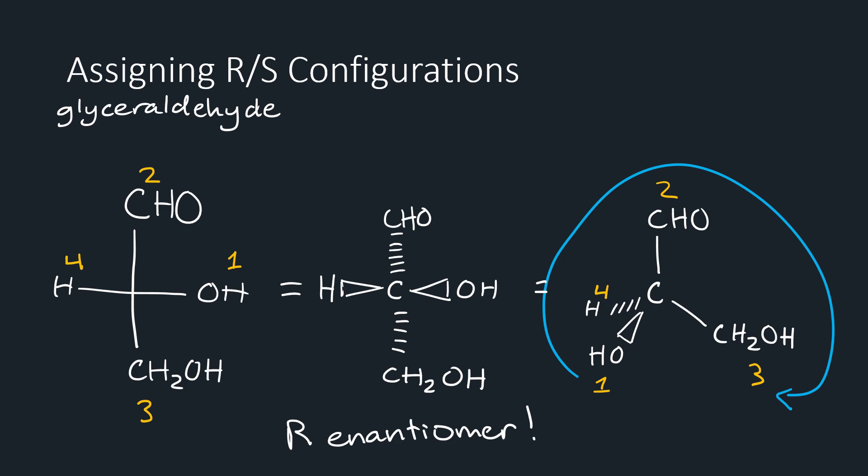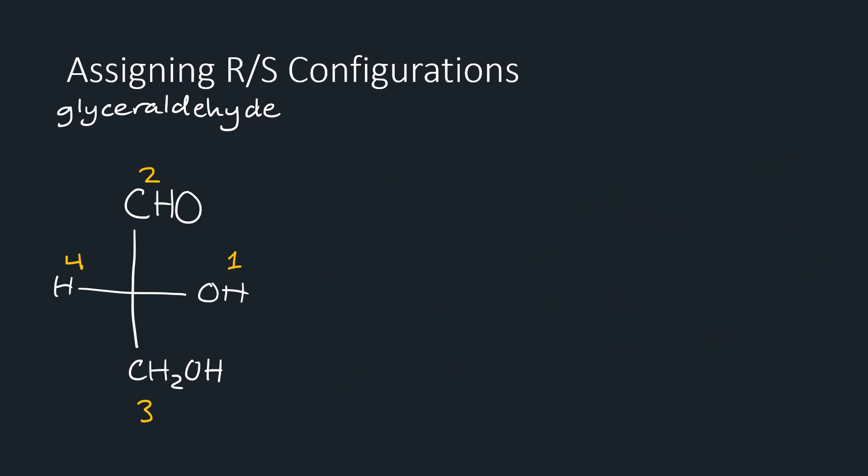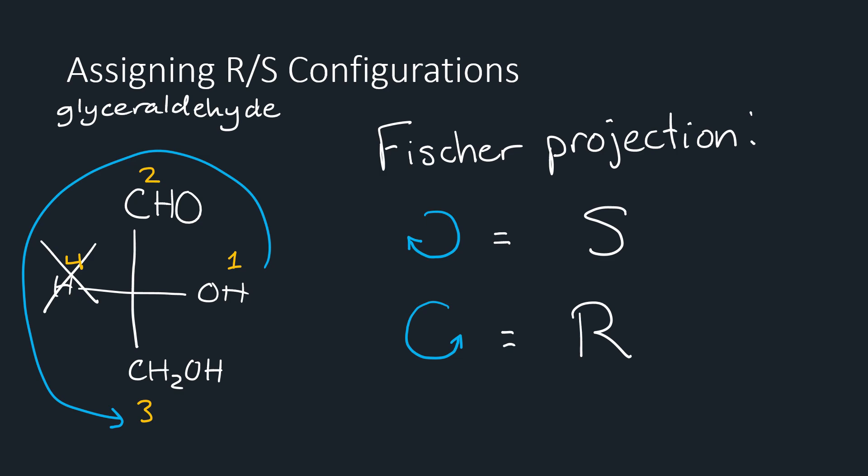But what's good about the Fischer projection is that we don't need to actually draw a perspective model to determine configuration. We only need to look at the assigned priorities on the Fischer projection itself. So in the same glyceraldehyde molecule, we'll have the assigned priorities to each of the groups. If we ignore the lowest priority group, in this case it is hydrogen, we can see that our priorities proceed in a counterclockwise direction. While this would imply an S configuration in a perspective drawing, that is not the case here. To get a correct configuration in a Fischer projection, all you have to do is remember that a Fischer projection assigns R and S opposite to a perspective drawing. That is, in a Fischer projection, a clockwise formation gives an S configuration, and a counterclockwise formation gives an R configuration. Don't get confused between the two. And if you're worried about messing up the configuration, just draw out the perspective drawing. This molecule, again, is R configuration as we determined from the glyceraldehyde Fischer projection.